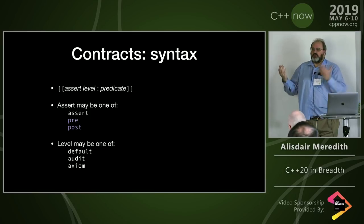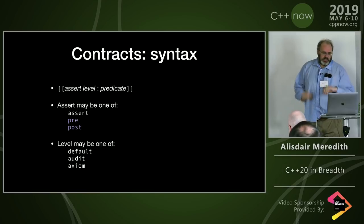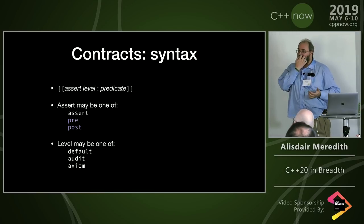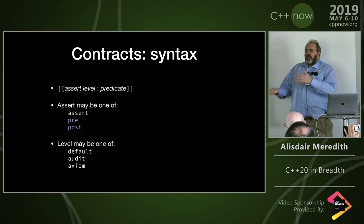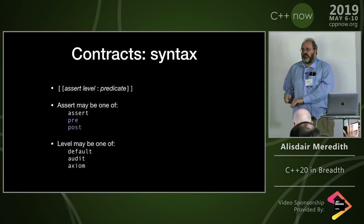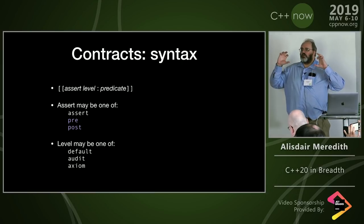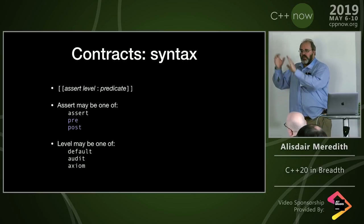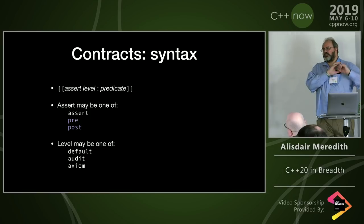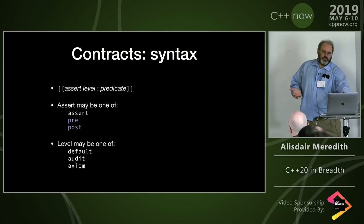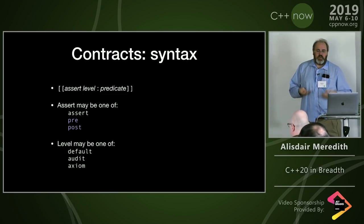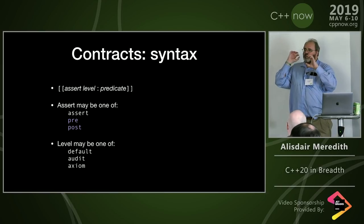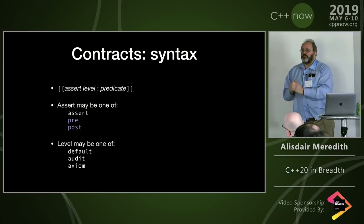The basic syntax uses attribute syntax. We have three kinds: 'assert' (similar to existing assert usage), 'pre' (precondition), and 'post' (postcondition). Pre and post go on your function declarations; preconditions are evaluated before entering the function, and postconditions are evaluated on any successful return. Assert goes inside the function definition, immediately before or after the particular piece of code you're concerned about.